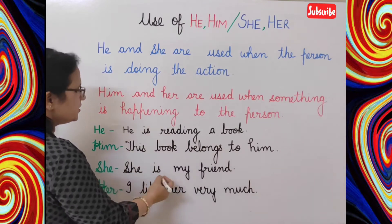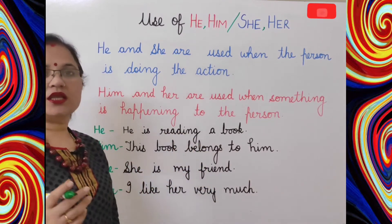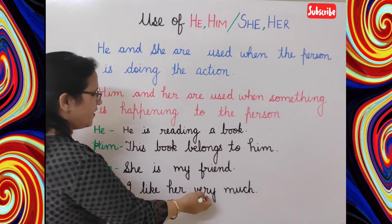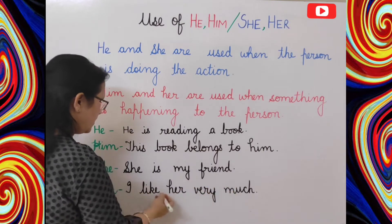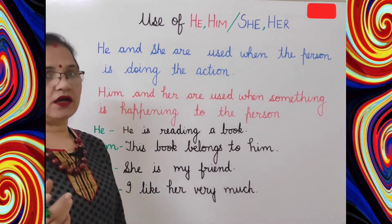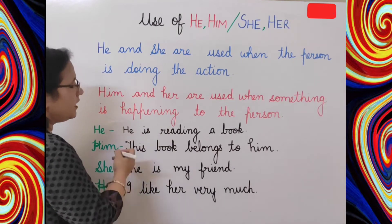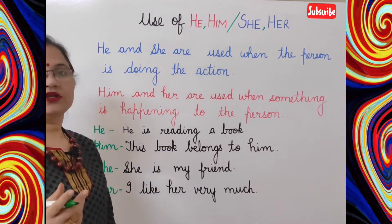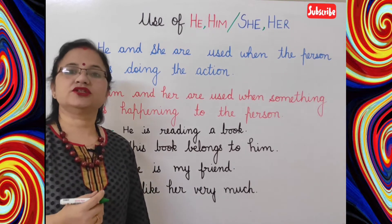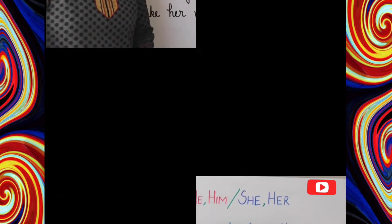Now: 'She is my friend' — woh meri dost hai. 'I like her very much' — mein usse bahut pasand karta hoon. So she and her are used for feminine gender.